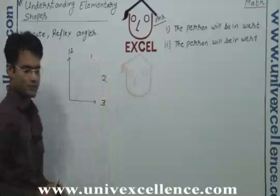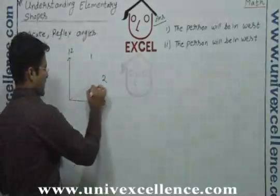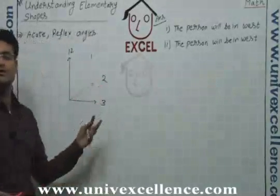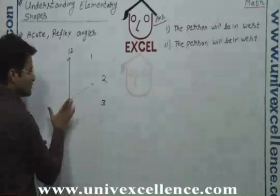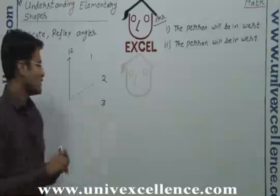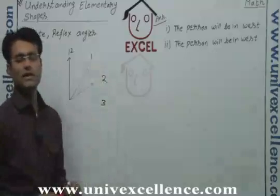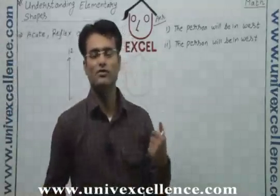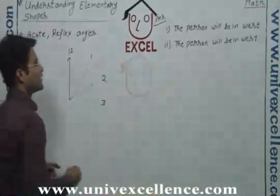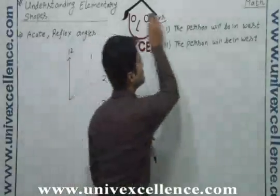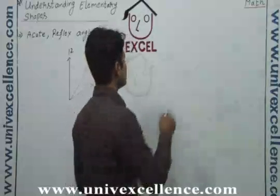This is 1, this is 2. What if the hand goes to 2 only? It is not going to 3, so it is not making a right angle. Now what if it goes to 1? What is the name of this angle? The name of this angle will be acute angle — so this will be an acute angle.